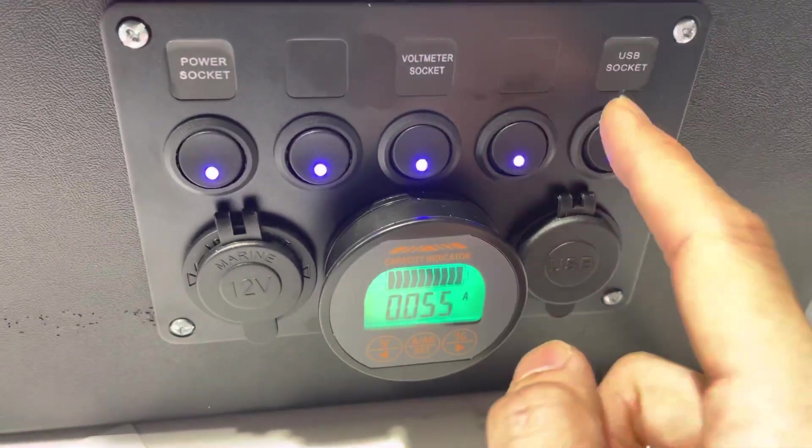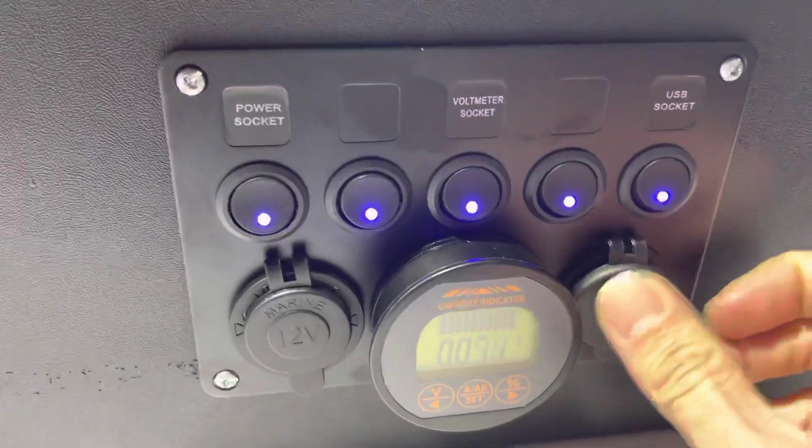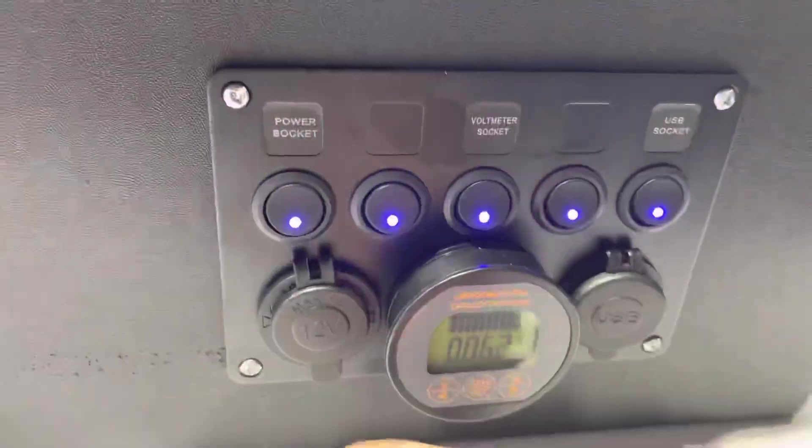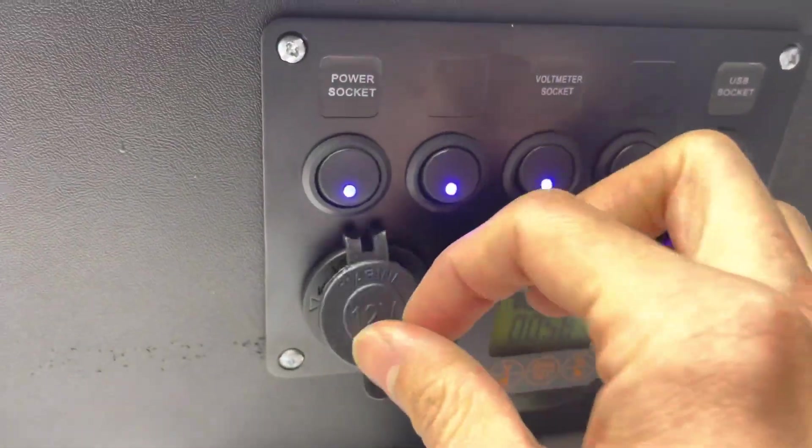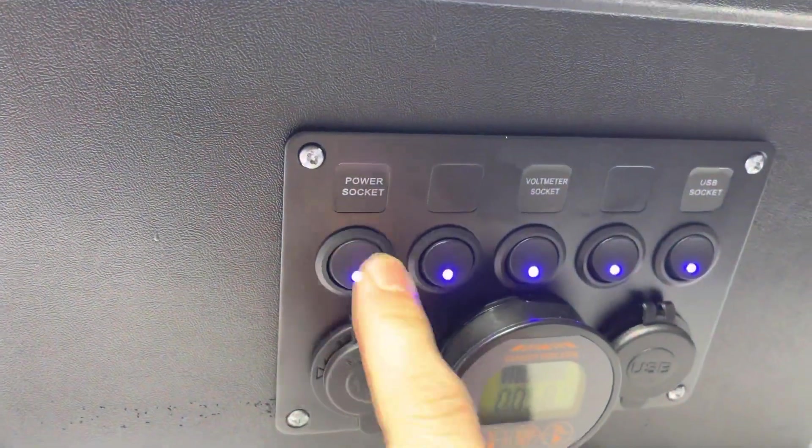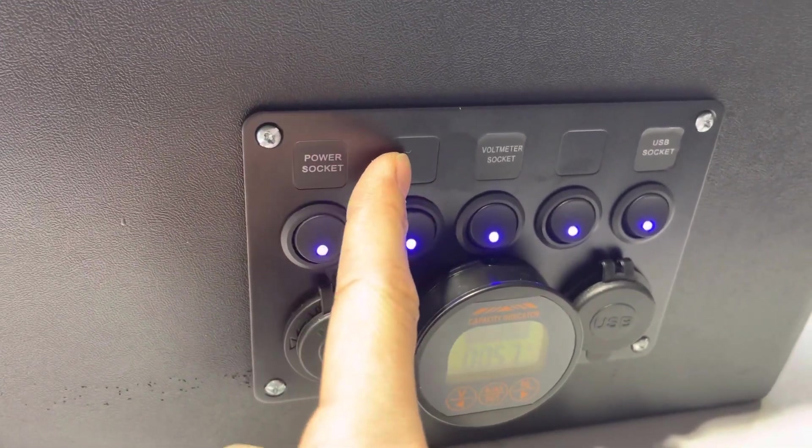That's kind of nice because I know exactly how much battery is being used even when the thing is in use. I've got the USB socket wired to this guy so I can turn that off if I want to. This is just a standard cigarette lighter plug and I can turn that off.